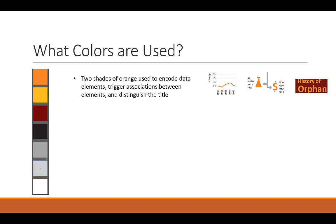Orange is also used to trigger associations between data elements, and it's used to distinguish the title graphic from the rest of the text.